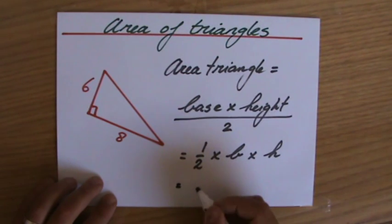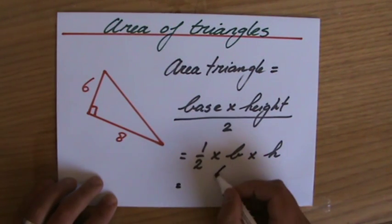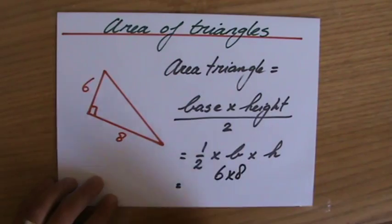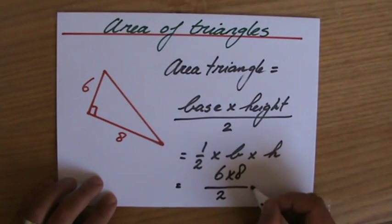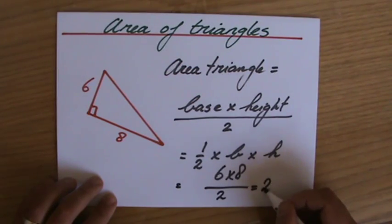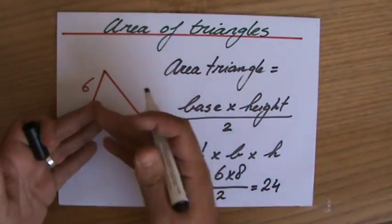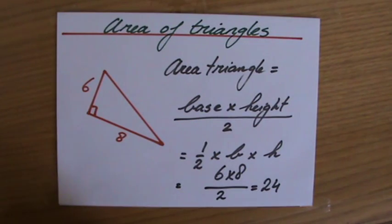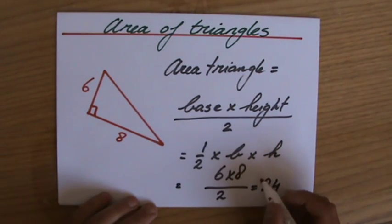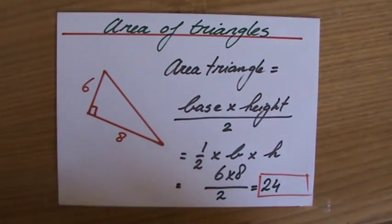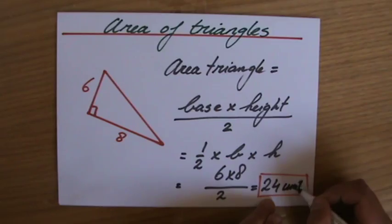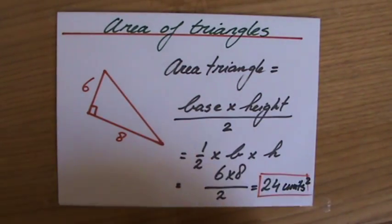So for this particular case, a half... or I'd rather do six times eight—that is the rectangle—and I divide that by two. So that is 48 divided by two, so that is 24 units squared, because I didn't specify any particular unit. So it's going to be 24 units squared because it's area. I hope that was useful. I'll see you for some example questions. Thank you.